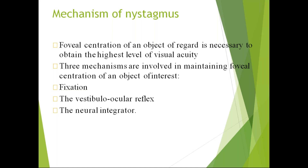Normally when you see an object, the image falls on the fovea and you can pursue it and the signals go to the brain. In nystagmus, foveal centration of an object is necessary to obtain the highest level of visual acuity. The falling of the image on the fovea is disturbed because of three mechanisms: fixation, vestibulo-ocular reflex, and neural integration.